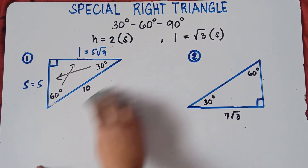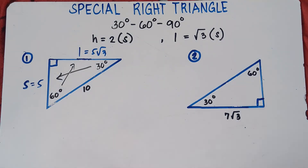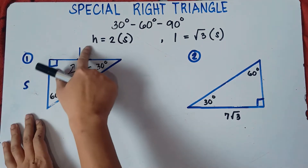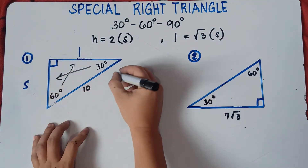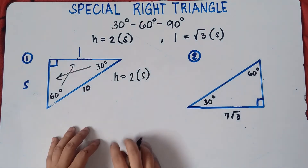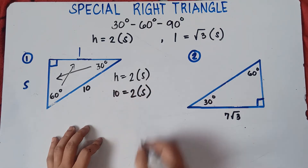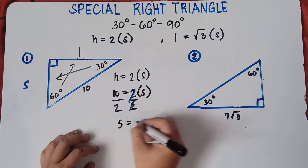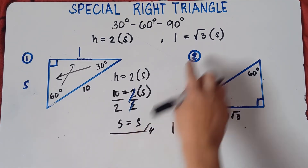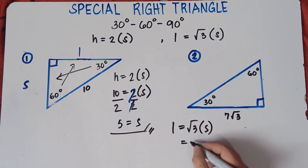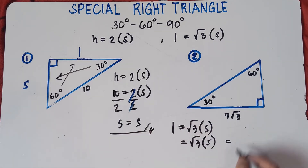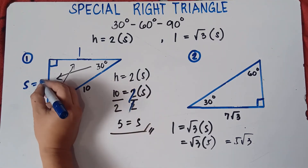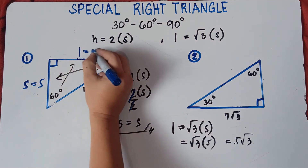You can answer directly if you master the formula, or use the algebraic approach: H = 2S, so 10 = 2S, divide both sides by 2, shorter leg = 5. Then longer leg = √3 × 5 = 5√3. Both methods give the same answer: shorter leg = 5, longer leg = 5√3.